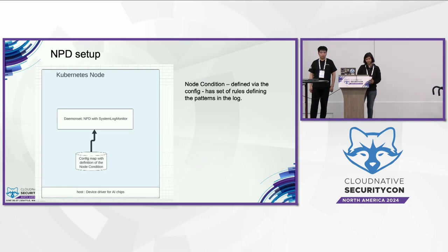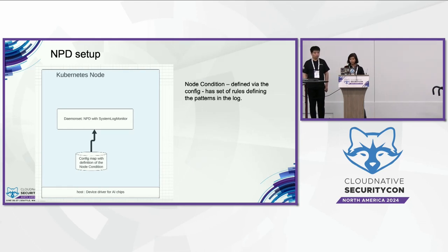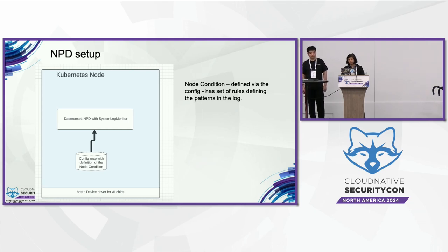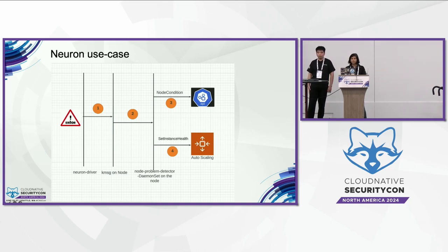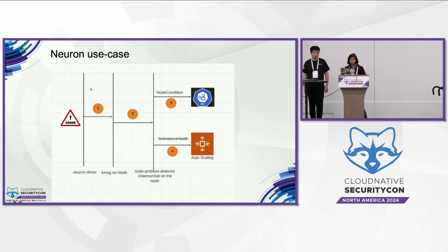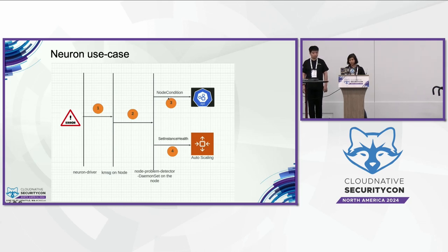The setup is pretty standard. It runs as a daemon set and is configured using a config file, which is mounted through a ConfigMap. This ConfigMap defines the node condition — essentially a set of regular expressions which NPD should watch for. The first entity that becomes aware of the error is the Neuron device driver. It logs a message to kernel message. Because NPD is watching for these messages, it publishes that as a node condition, as defined in the ConfigMap, to the Kubernetes control plane. This will show up in your described node output, and any watchers on the node condition will trigger.